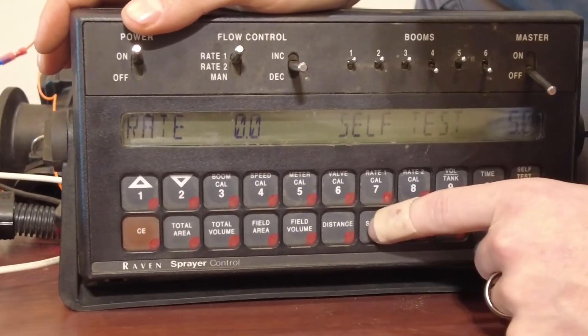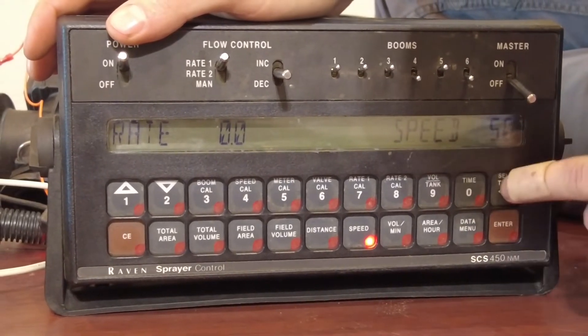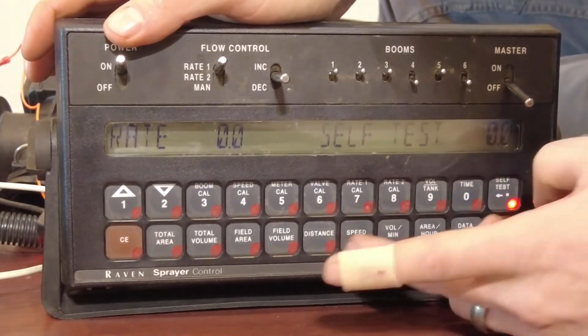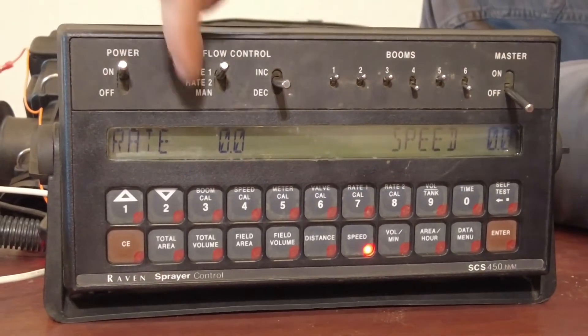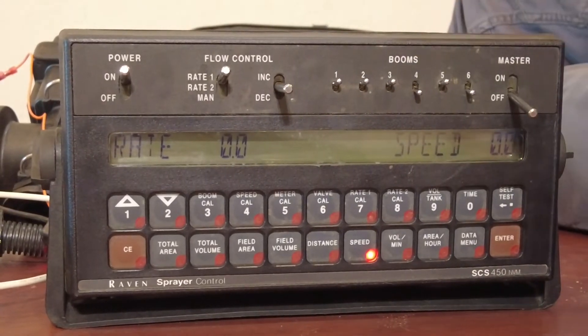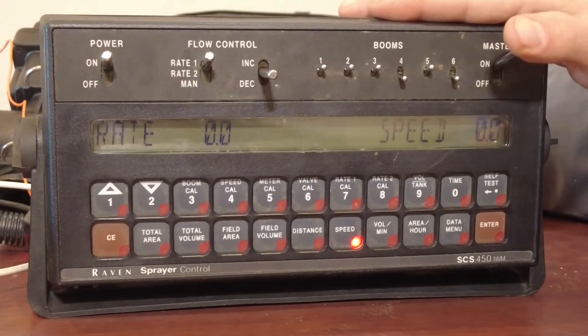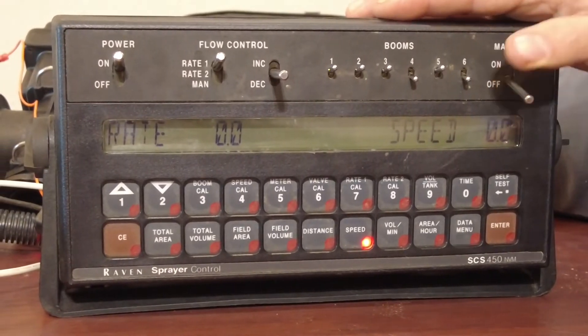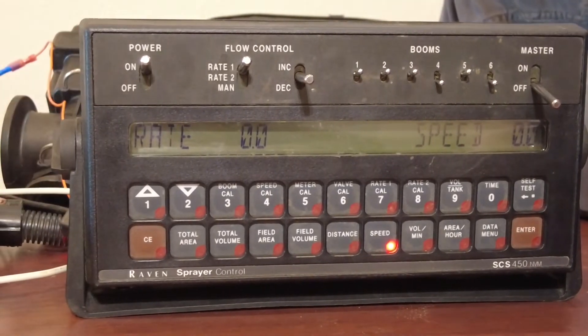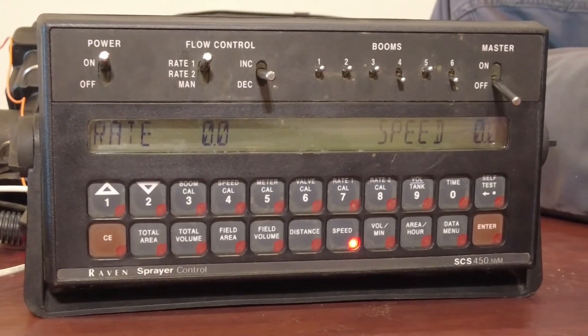So when I am at my run screen using the Raven, what I like to do is I'm going to set my self-test back to zero. And then, this is my run screen right here. It shows my actual rate and it shows my speed. And that speed is the speed that you're driving through the field. So when you turn it on, it starts trying to apply based on what the flow meter says. So that is how to set up a Raven 450 from scratch.